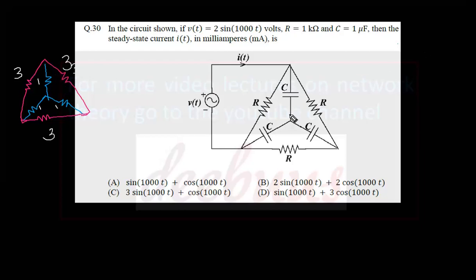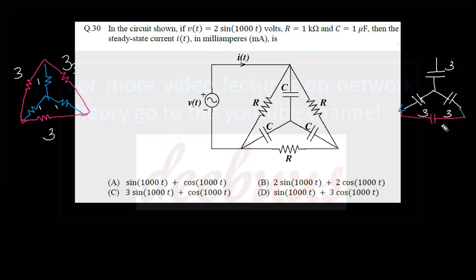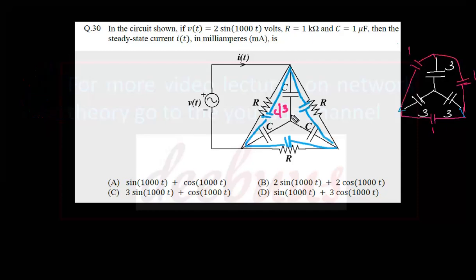But in the question, it is mentioned as capacitor. So for the capacitance case, it is just inverse. Suppose if the value of the capacitance is 3, the delta connected capacitance value must be 1. So we are applying this principle to this problem. I am changing the star connected capacitance of value C to C/3 in the figure.